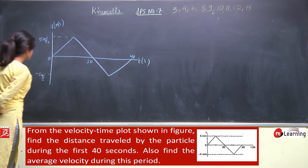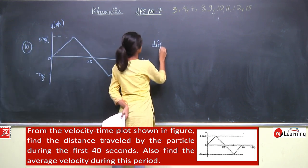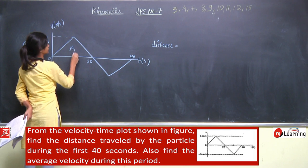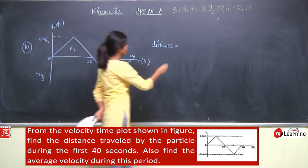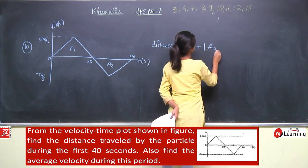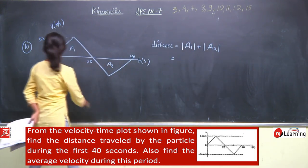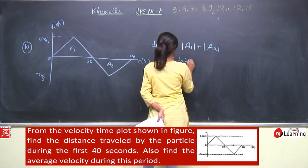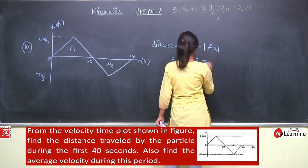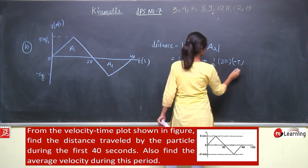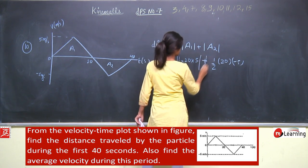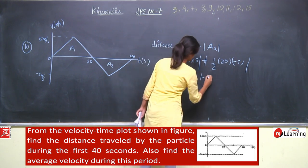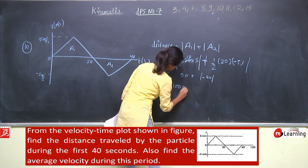Average velocity and the distance. Distance is area under the velocity-time graph. Suppose this is A1 and this is A2. Distance is mod A1 plus mod A2. The area under the graph: half into base into height gives 5, plus half into base into height gives minus 5. Taking the modulus of both, we get 50 plus 50, which equals 100. Distance will be 100 meter.